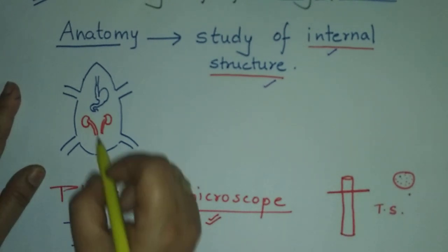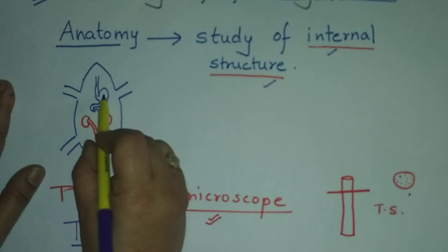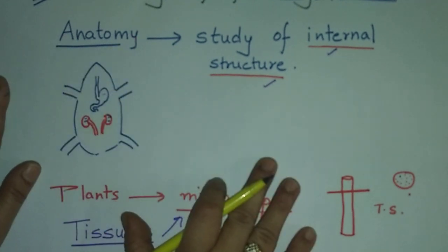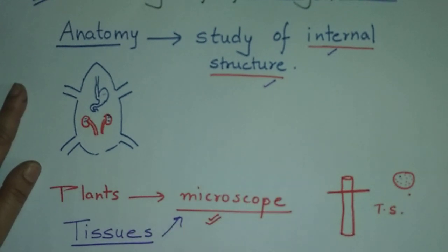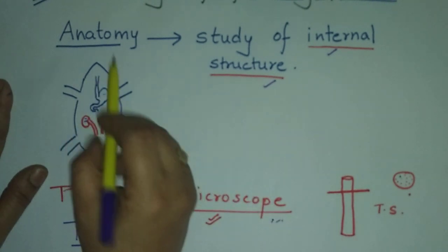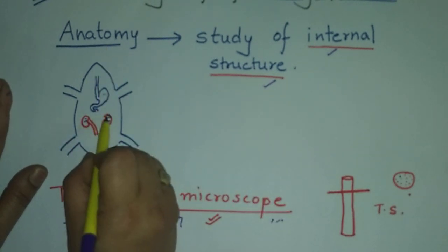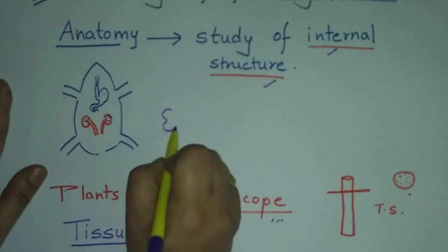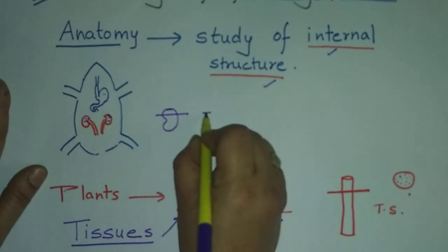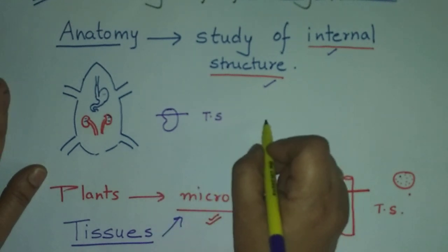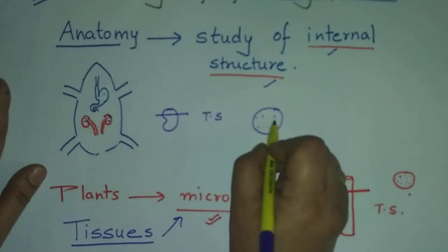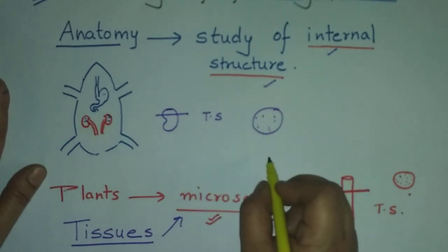In case of animals, we can see the kidney, the heart, the stomach — that is the study of anatomy — without using any microscope. But when we use a microscope, for example taking the kidney and cutting a transverse section of it, we can see the internal structure of the kidney using a microscope.